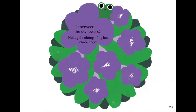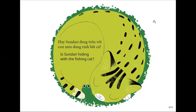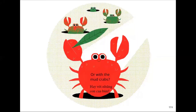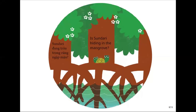Or between the sky flowers. Is Sundari hiding with the fishing cat? Where is Sundari here? Or with the mud crabs. Is Sundari hiding in the mangrove? Where's Sundari? Is she here?